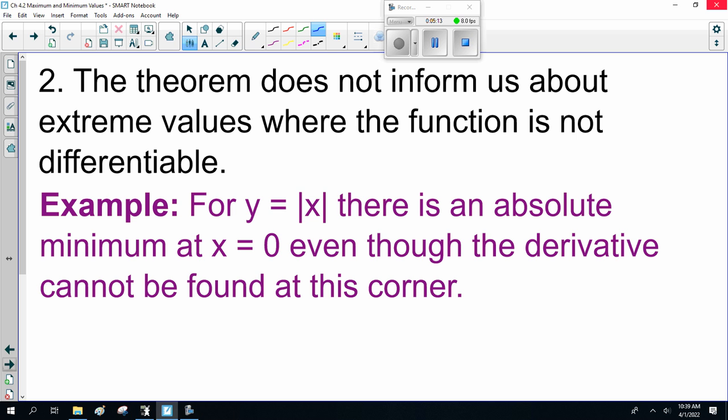Now, the other problem is the theorem does not inform us about extreme values where the function is not differentiable. For example, y = |x|, there's an absolute minimum at x = 0. You draw that graph. y = |x| will look like this. And you realize that is an absolute minimum. But the derivative can't be found at this corner, so Fermat's theorem doesn't help us. So we have to be careful here.